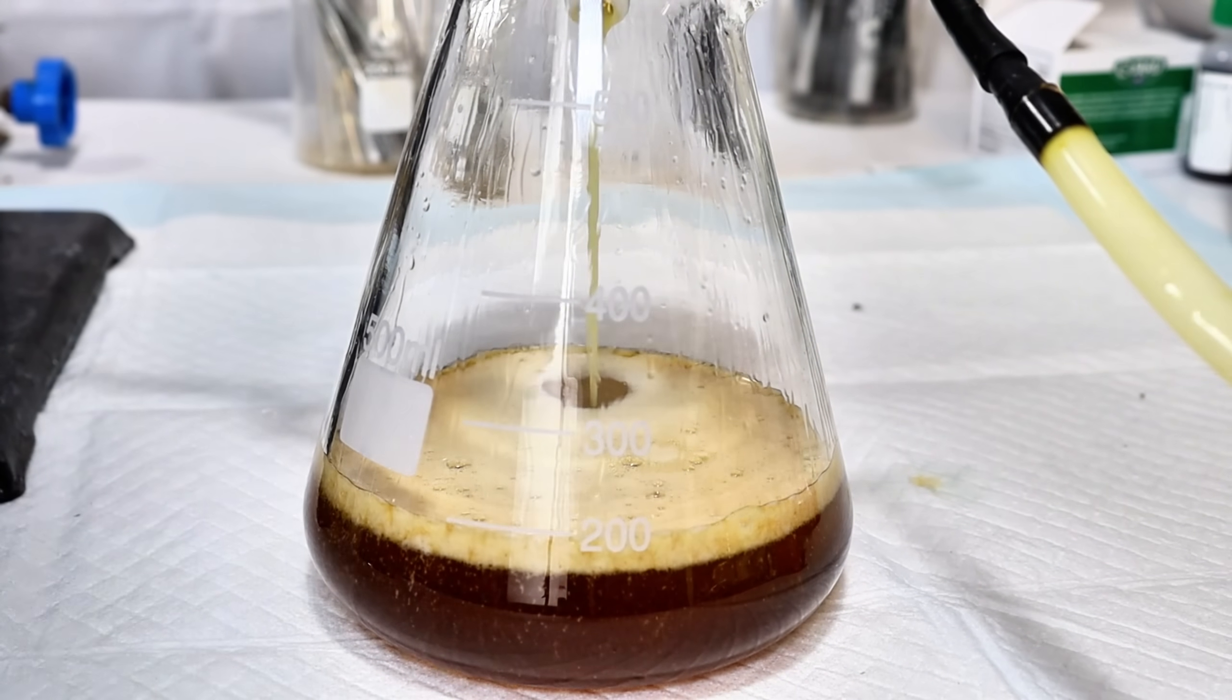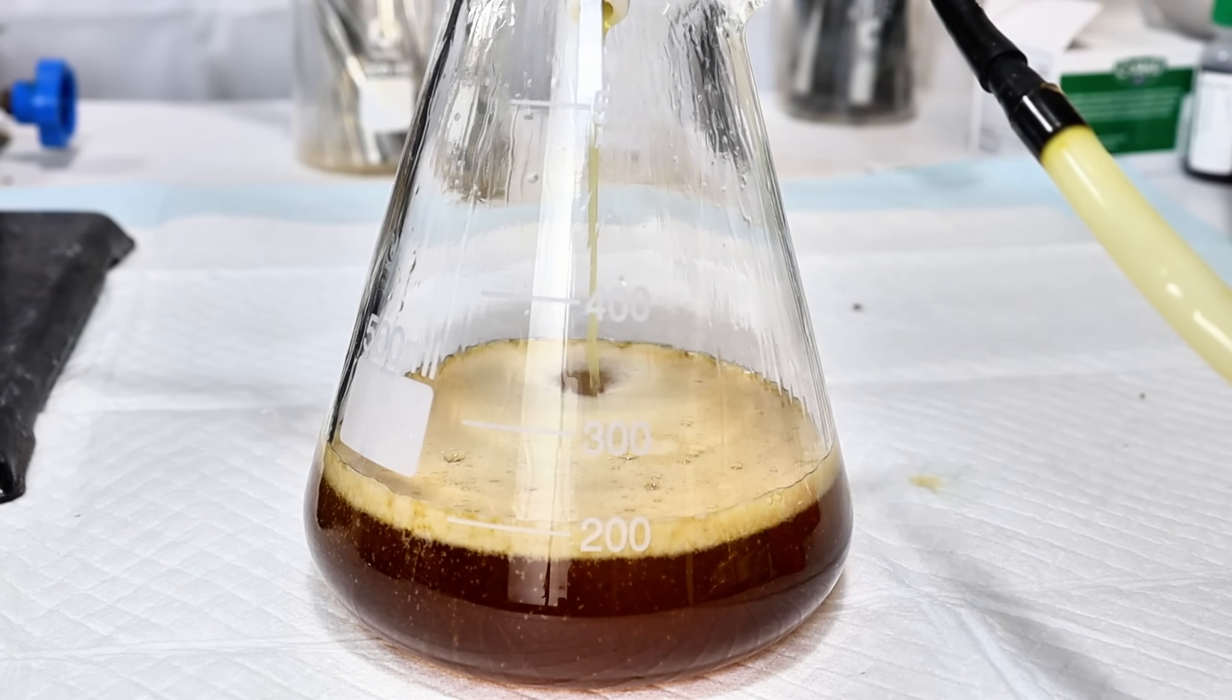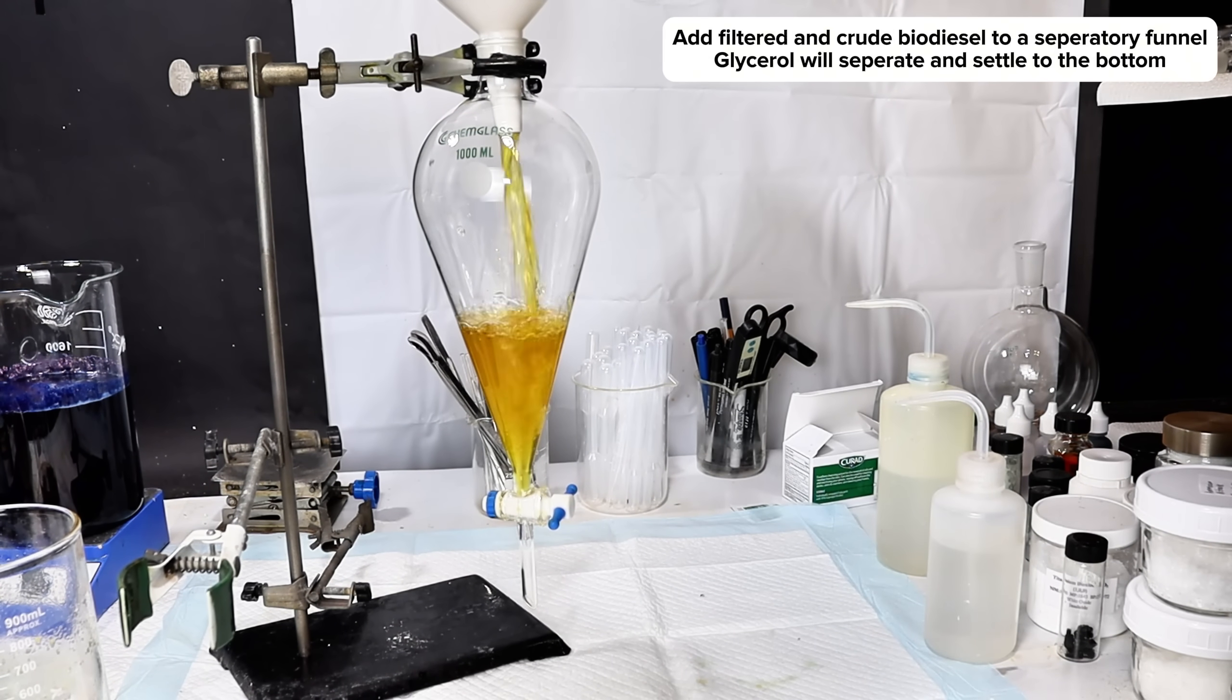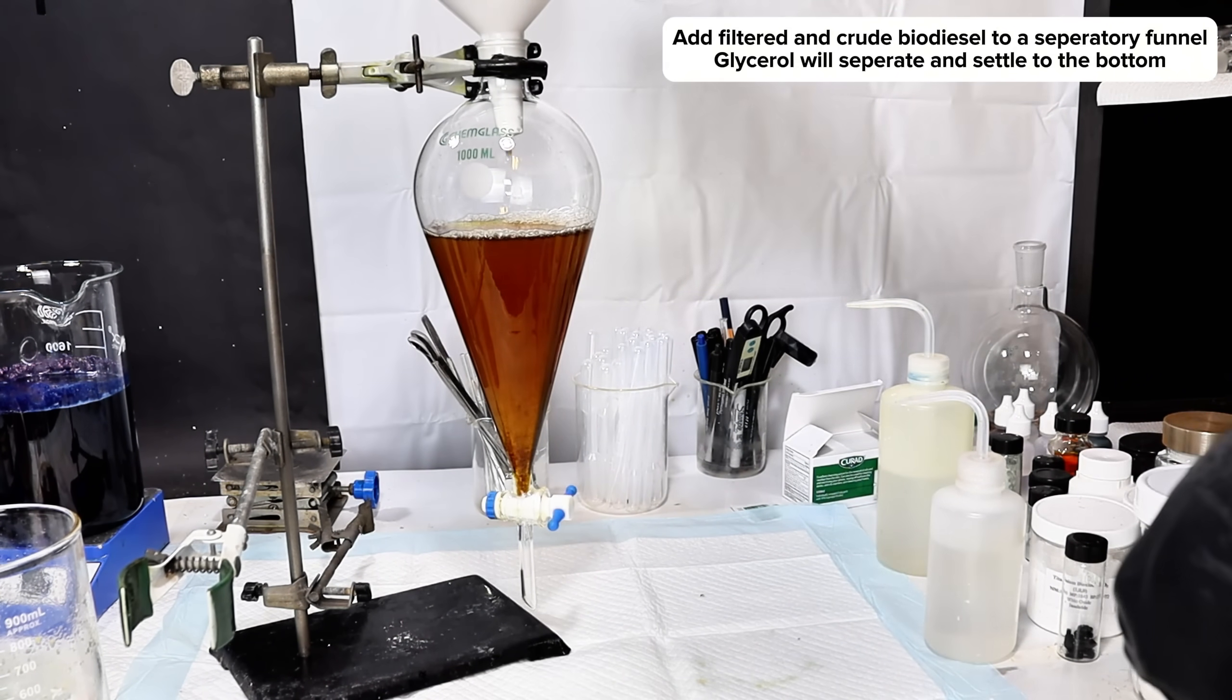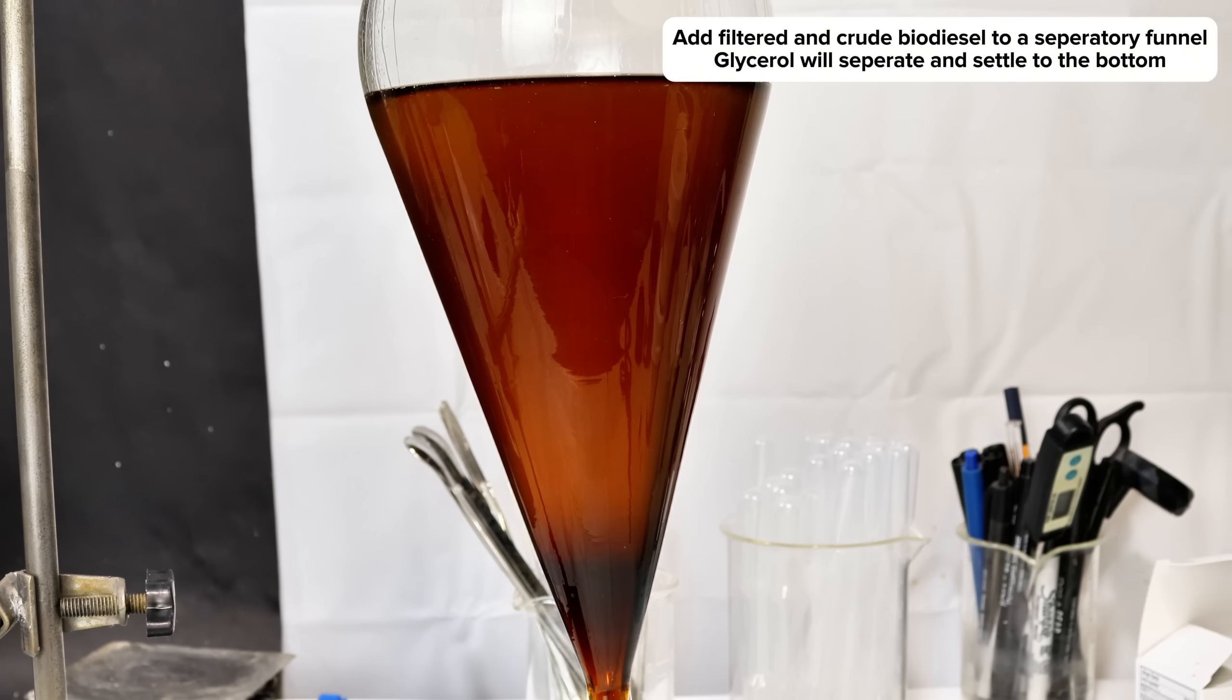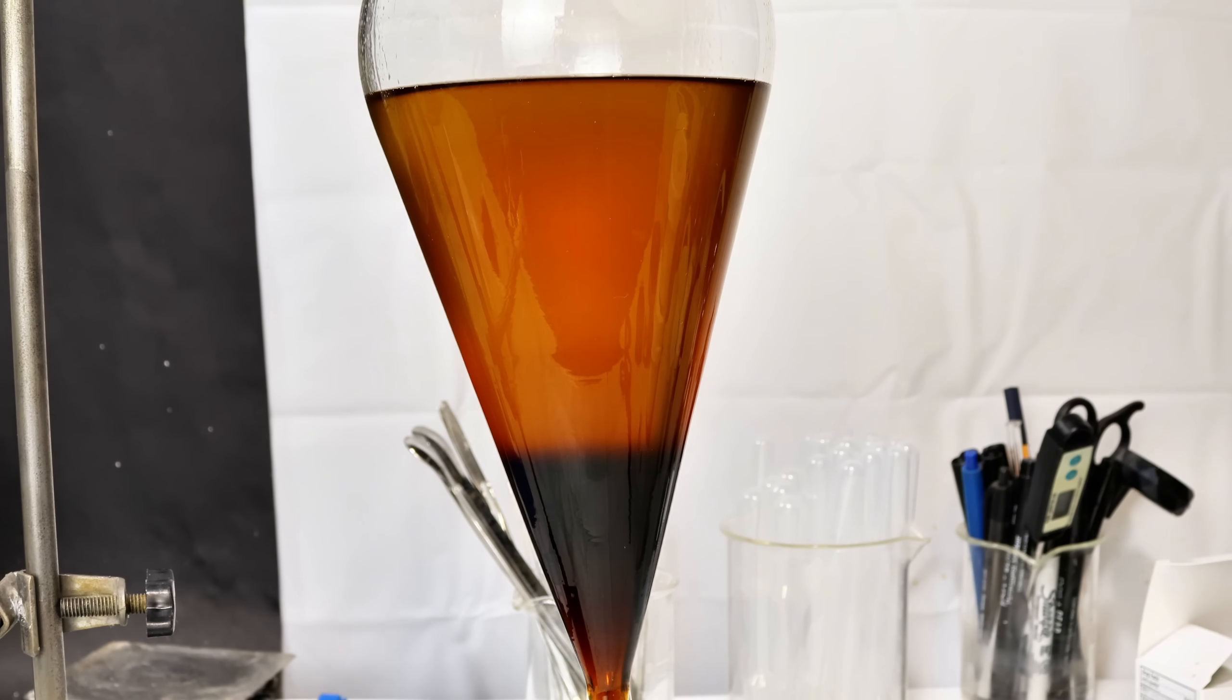So I took the beaker off the heat and passed the crude biodiesel through my Buchner funnel to remove all of the excess hydroxide. This was then transferred to a separatory funnel, at which point I left it overnight to allow the more polar and very dense glycerol to settle to the bottom.